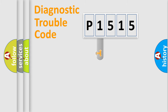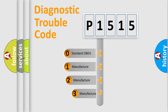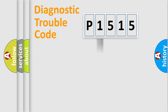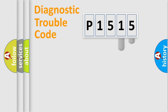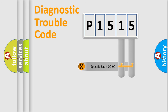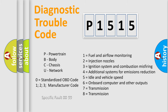This distribution is defined in the first character of the code. If the second character is zero, it is a standardized error. In the case of numbers 1, 2, or 3, it is a manufacturer-specific error. The third character specifies a subset of errors. This distribution is valid only for the standardized DTC code, and only the last two characters define the specific fault of the group. Such a division is valid only if the second character is expressed by the number zero.